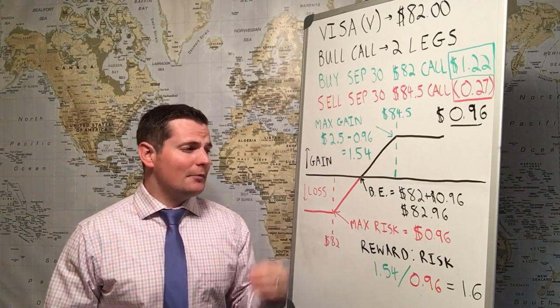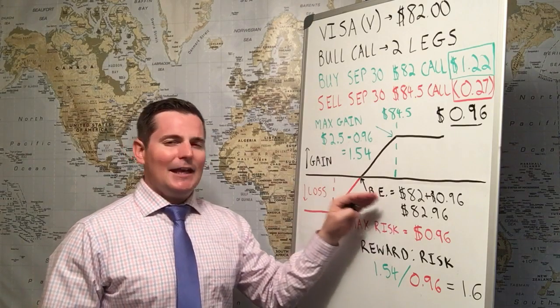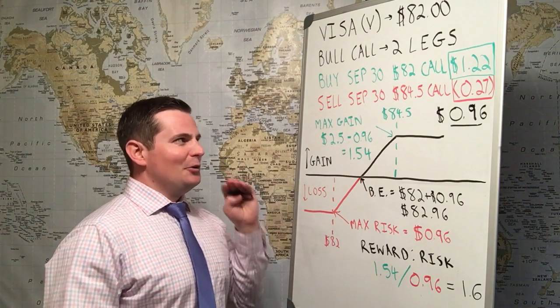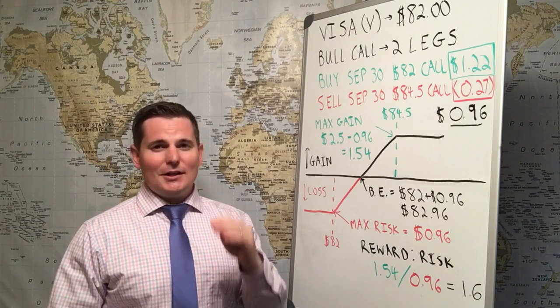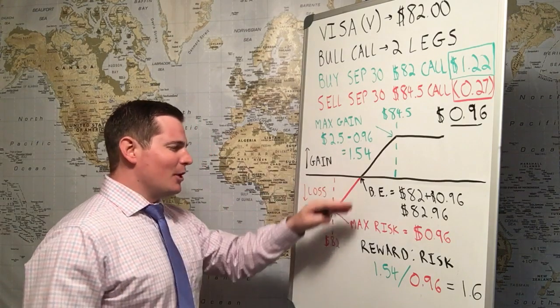Basically, on September 30th, if this stock closes at $82.96, you will only have lost the commission that you made on the trade. That's your break even point.